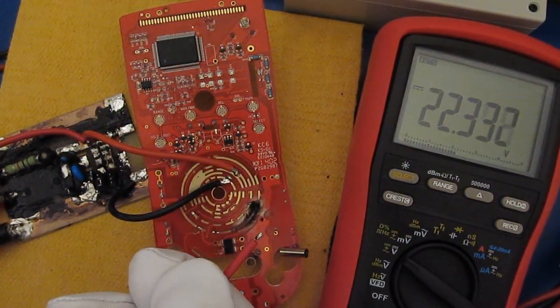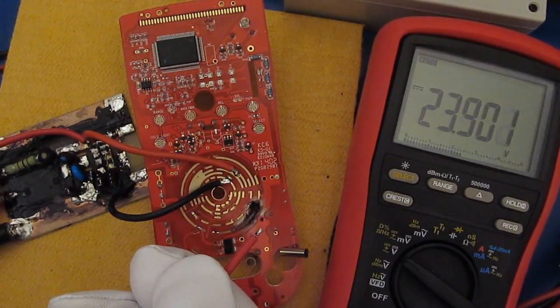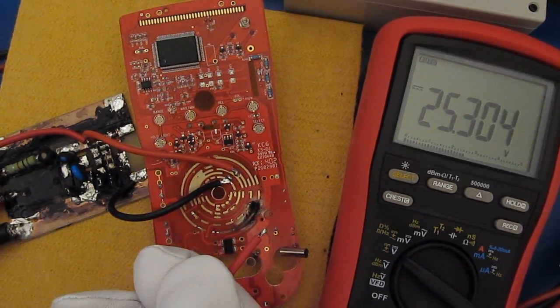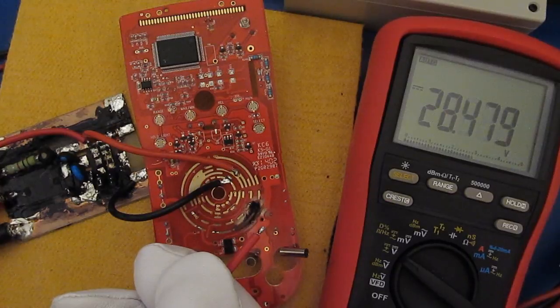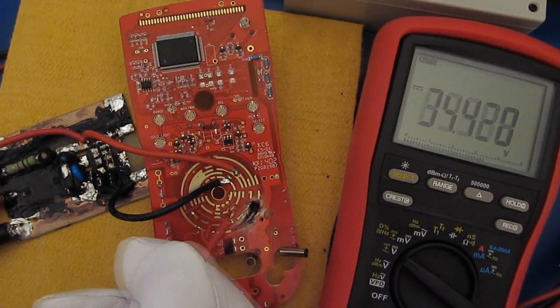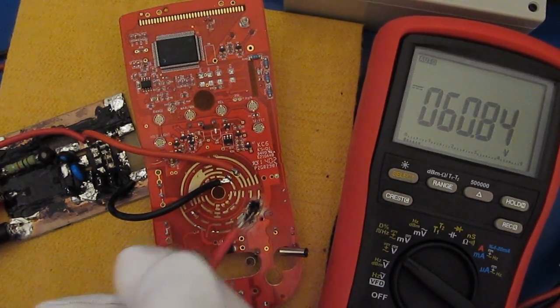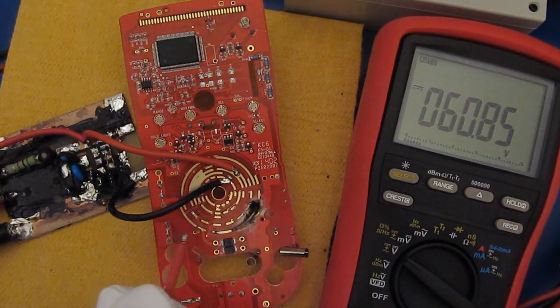All right, let's go ahead and turn up our power supply, and we'll take this up to about 600 volts. And that's roughly what the 121 GW is rated for.